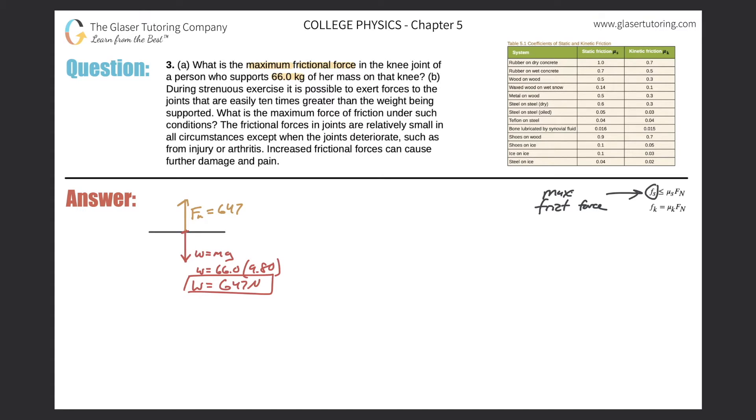Now that we know all that, we can finally calculate the maximum frictional force because remember we're really finding the static frictional force. The static frictional force has to be less than or equal to μ, which is the coefficient of static friction, times the normal force. In order to do this I need the coefficient. So let's go to our table - which system correlates well to the knee? It looks like bone lubricated by synovial fluid. Now remember we're talking about static friction here, so that's the coefficient.